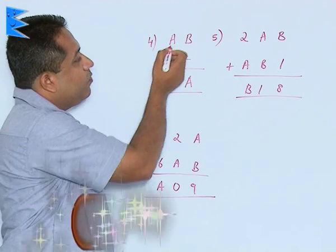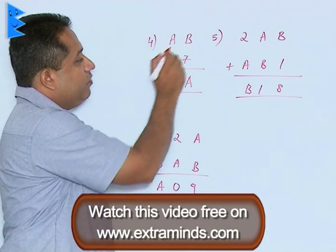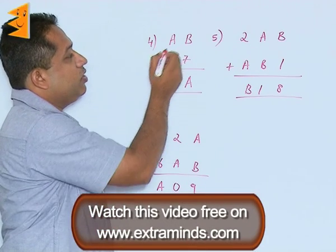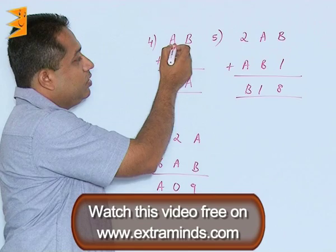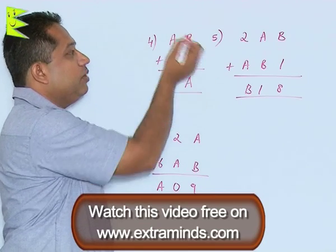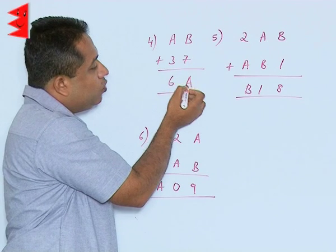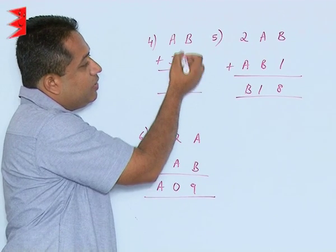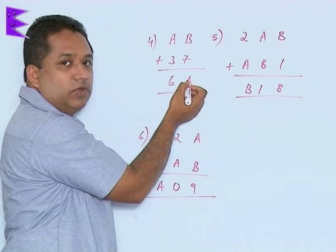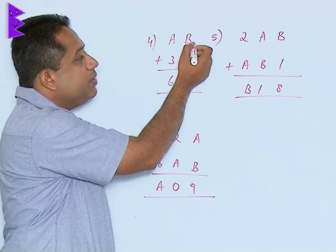Therefore, let us try out the value of A as 2. If we take the value of A as 2, then what is going to happen? This will be 2. 2 plus 3 is 5. So there is a possibility of 1 getting carried over, and if I am getting 2 here, then 7 plus something should be ending with 2. So we can say the value of B can be 5.